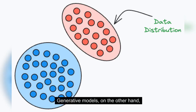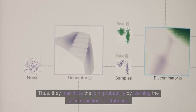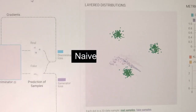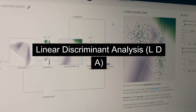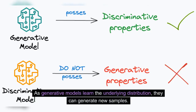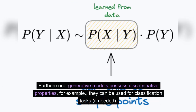Generative models, on the other hand, are primarily centered around learning the class conditional distribution. Thus, they maximize the joint probability by learning the class conditional distribution. Popular examples include naive Bayes, linear discriminant analysis (LDA), and Gaussian mixture models. As generative models learn the underlying distribution, they can generate new samples. However, this is not possible with discriminative models. Furthermore, generative models possess discriminative properties — for example, they can be used for classification tasks if needed.